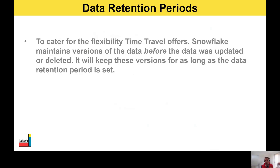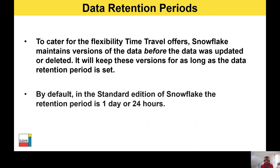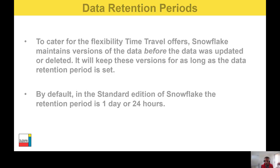Data retention periods: to cater for the flexibility that Time Travel offers, Snowflake maintains versions of the data before it was updated or deleted, and keeps these versions for as long as the data retention period is set. By default, in the Standard Edition of Snowflake, the retention period is one day or 24 hours. In this table we can look at the default, minimum, and maximum data retention periods on a per-object basis and the difference between Standard and Enterprise Edition and higher.